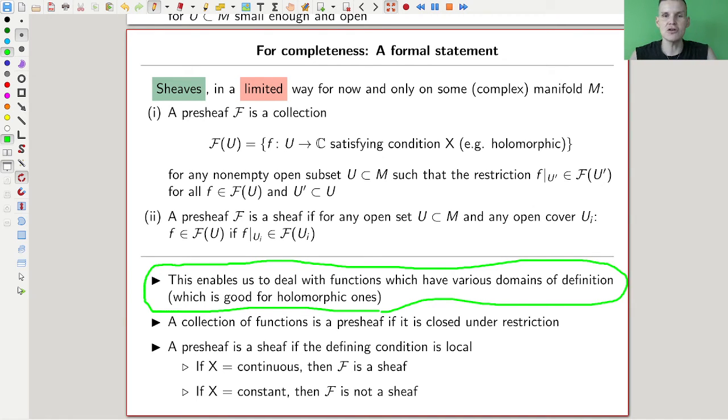And the way to deal with this is to have the option of varying the domain of your map. And this is maybe not, certainly what you see on the screen right now works for real manifolds as well, but it's not as crucial as for complex manifolds. For complex manifolds, we really want this ability to vary the domain of definition of our various functions. It's really good for holomorphic ones. So the definition of a sheaf in a limited way, in just whatever I write down, just as a primer on what a sheaf is supposed to be, it's just a collection of functions satisfying some condition. Holomorphic, continuous, whatever, something like that.